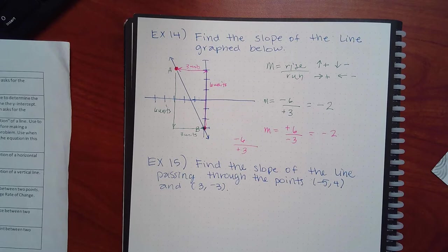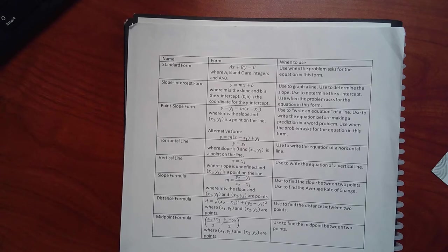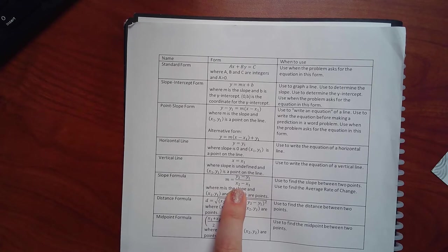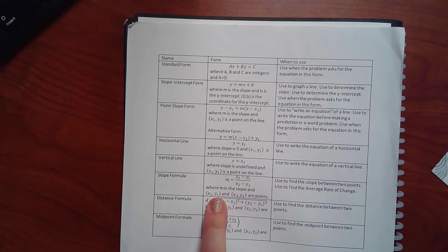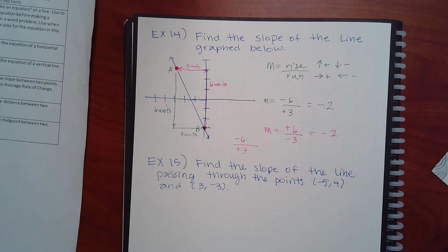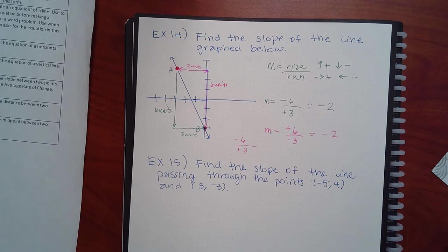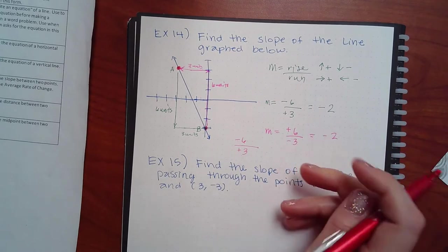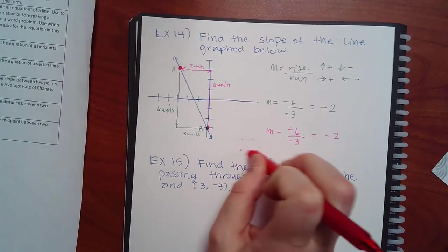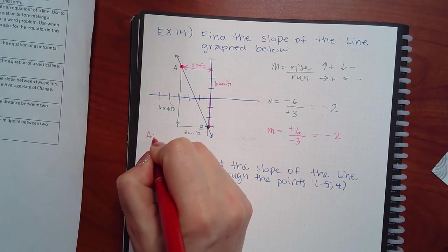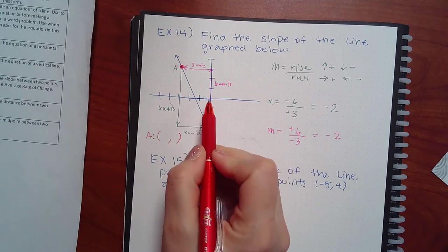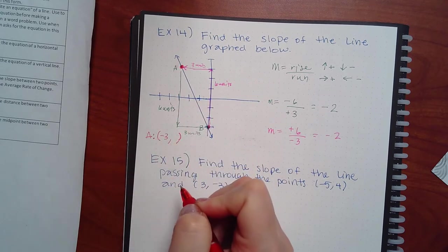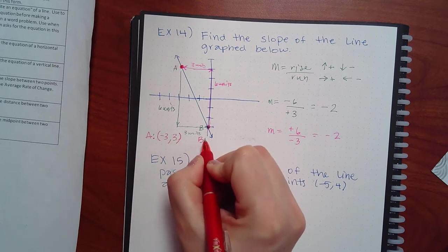I want to show you another way using the slope formula on your reference sheet. It says m equals y2 minus y1 over x2 minus x1, where x1,y1 and x2,y2 are points. Instead of counting visually, you can algebraically figure it out. Label the points: point A has coordinates negative three for x — what about y? Positive three.